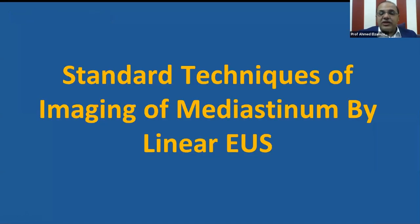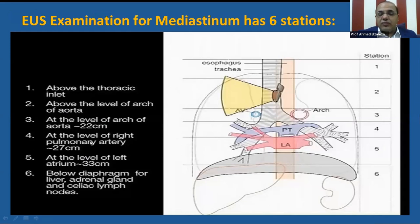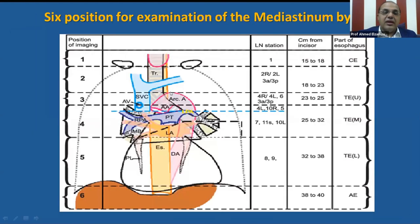The standard technique for imaging of the mediastinum by linear EOS has six stations. Station 1 is above the thoracic inlet. Station 2 is above the level of the arch of aorta. Station 3 is at the level of the arch of aorta, about 22 centimeters from the incisors. Station 4 is at the level of the right pulmonary artery. Station 5 is at the level of the left atrium. And finally, station 6 is at the diaphragm. These are the six positions for examination of the mediastinum by EOS.